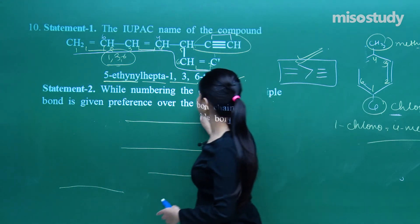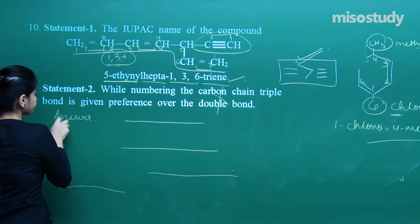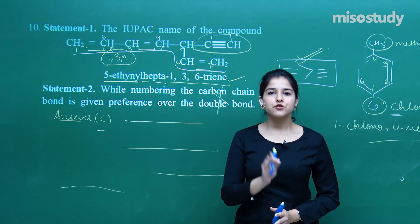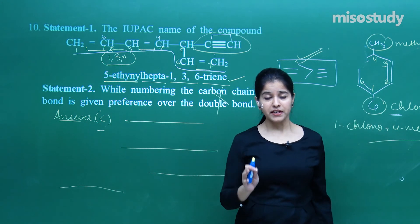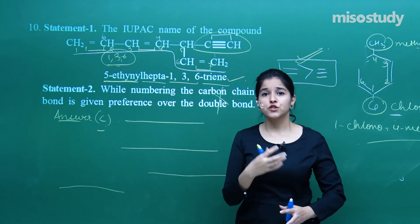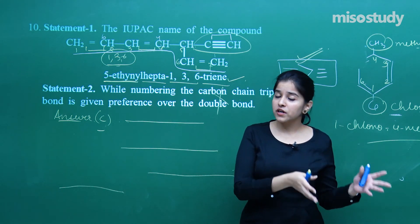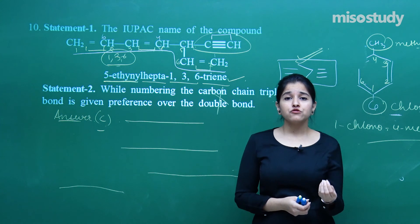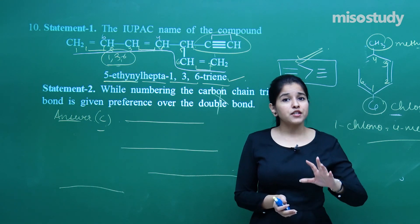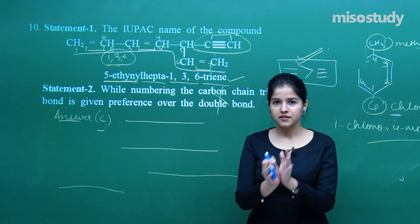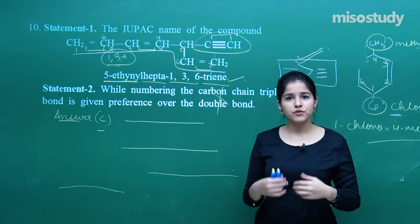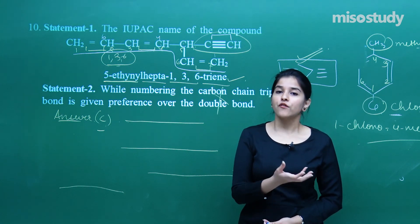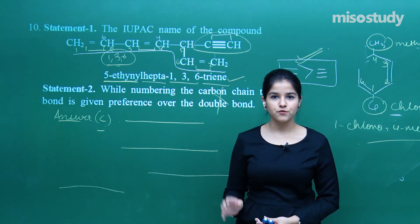Statement 1 is true, statement 2 is false. I hope everybody has got the answer. You need to practice a lot more questions in the case of IUPAC naming — it's a typical topic because it has so many types of arrangements of atoms leading to complicated molecules. You need to have a proper idea about the rules: how to assign priorities, how to assign the type of functional groups, whether it is terminating or non-terminating. We have discussed NEET, mains, and advanced type exercises. Practice them and I will be back in the next session. Till then, revise and practice what we have done so far. Have a good day.